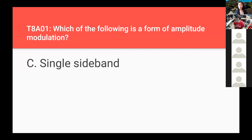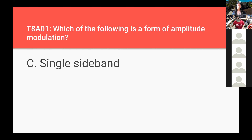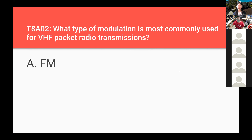Which of the following is a form of amplitude modulation? Single sideband, also known as SSB, is a form of amplitude modulation. Which type of modulation is most commonly used for VHF packet radio transmissions? FM — frequency modulation for VHF packet radio transmissions.